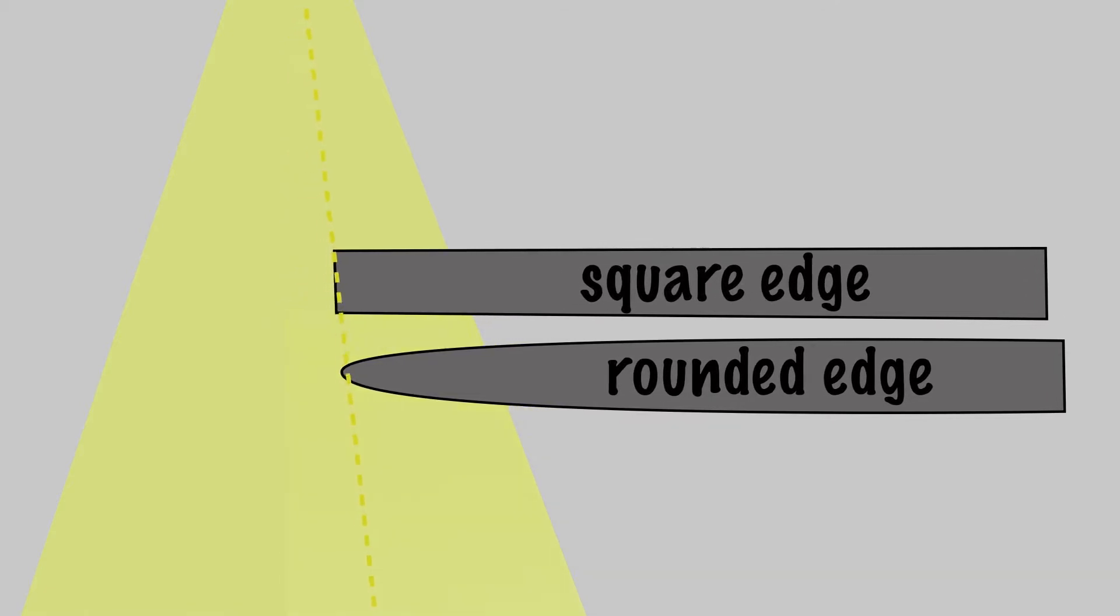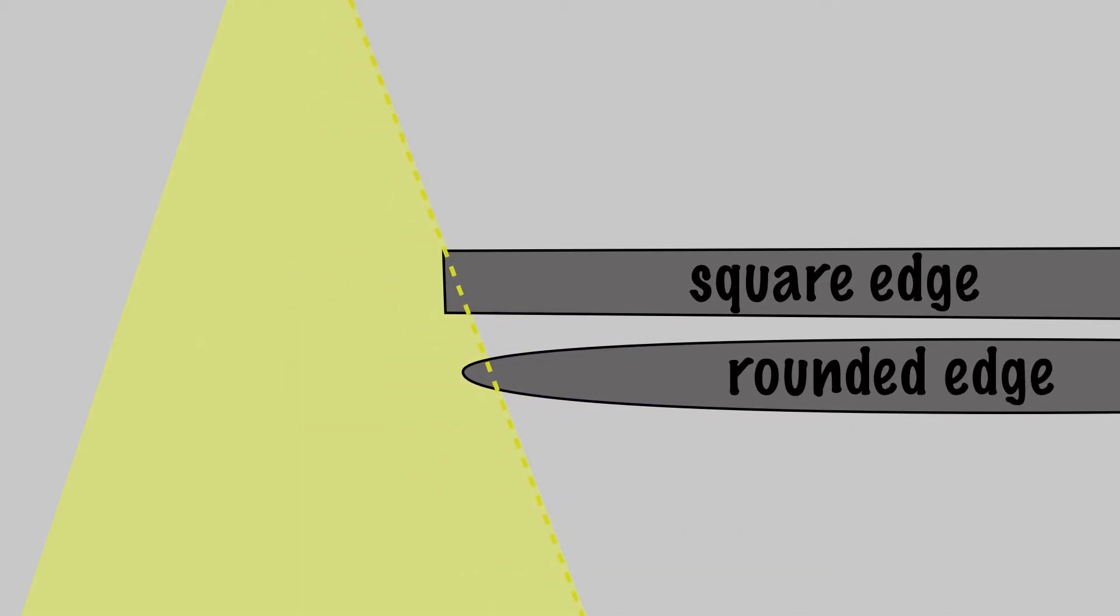Regardless of its position, with a rounded leaf, the amount of MLC material the beam passes through is relatively constant.